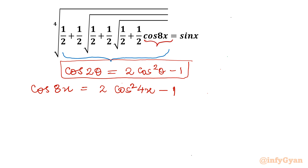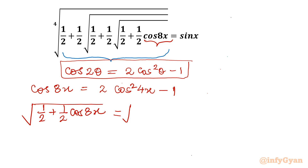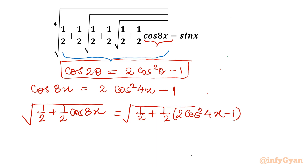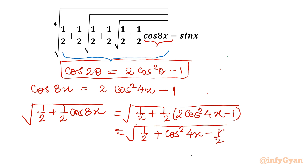So I am going to substitute the value of cos 8x. The portion half plus half cos 8x becomes the square root of half plus half times (2 cos² 4x minus 1). Once we expand, this gives square root of half plus cos² 4x minus half. The plus half and minus half cancel, leaving square root of cos² 4x, which simplifies to cos 4x.